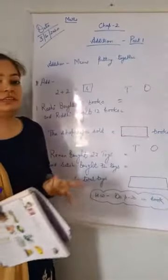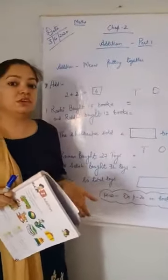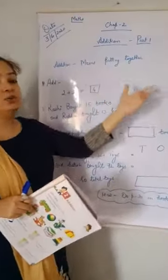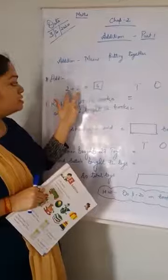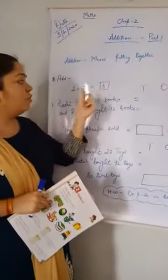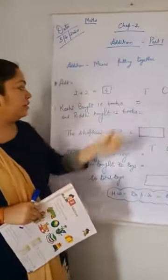Okay, what is Addition? Addition means putting things together. For example, 2 plus 2, what will come? 4. So it means putting things together.